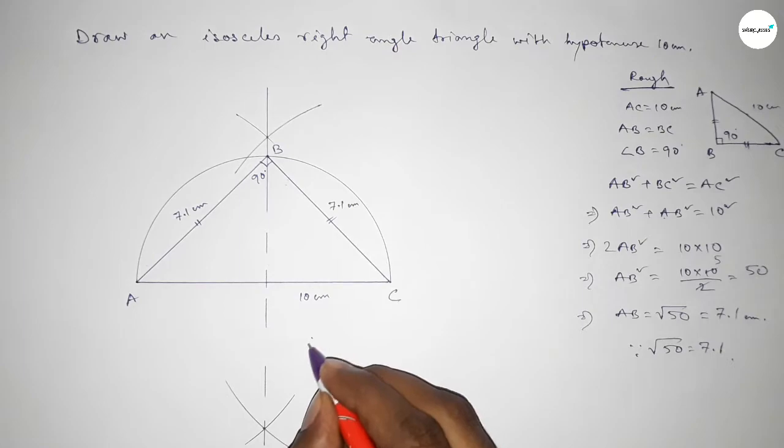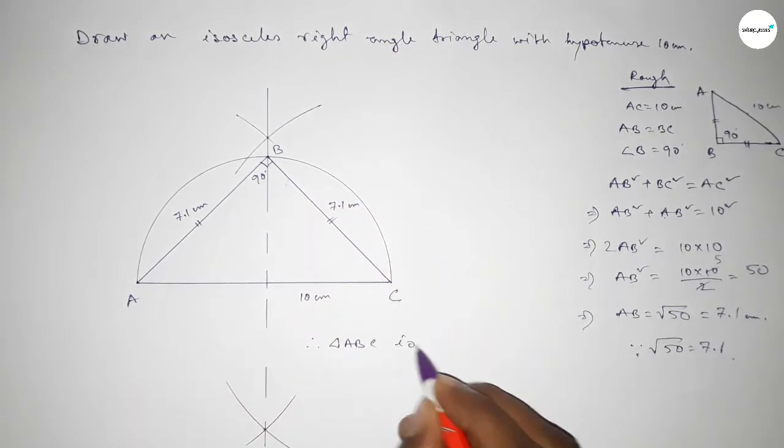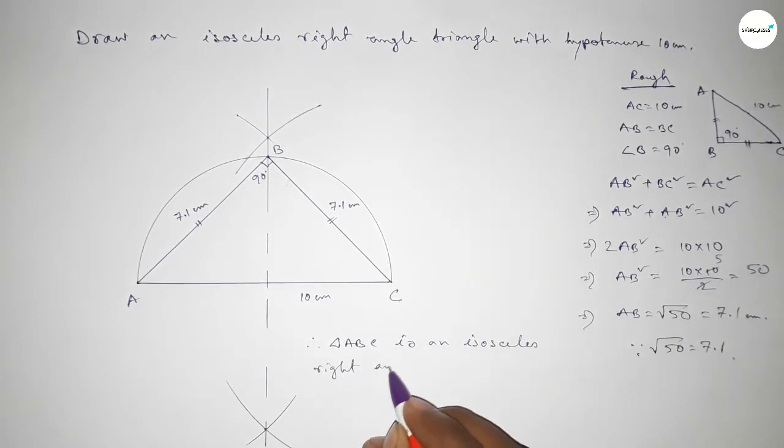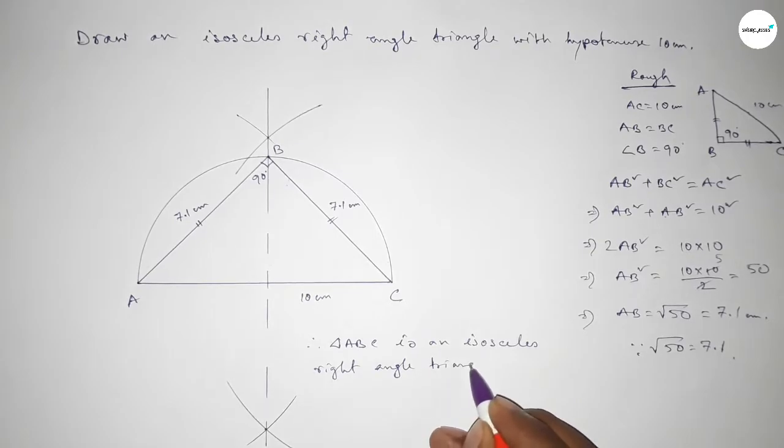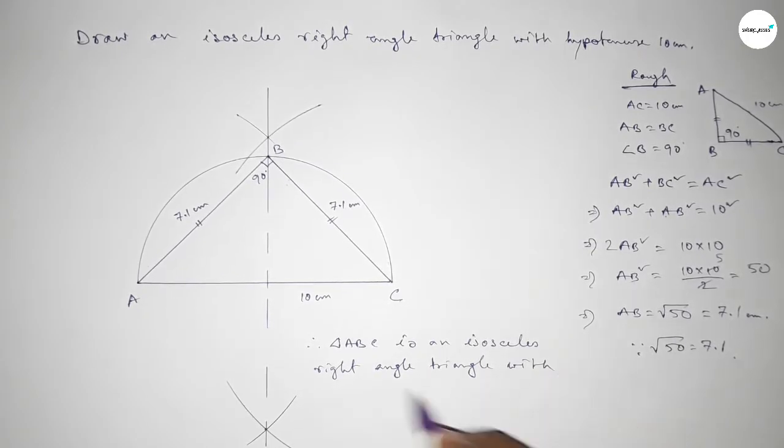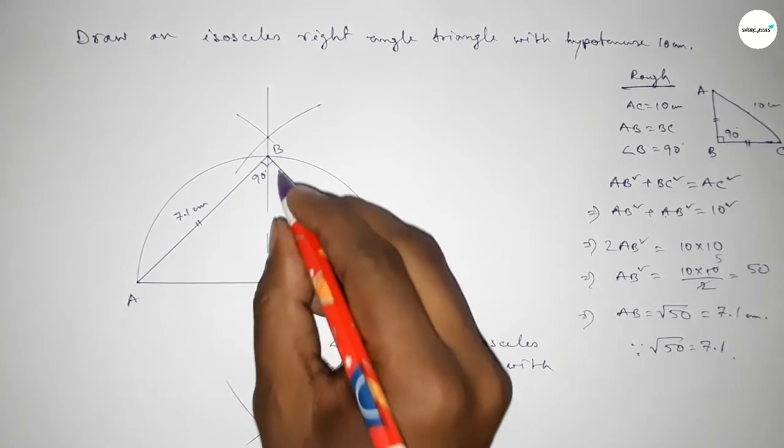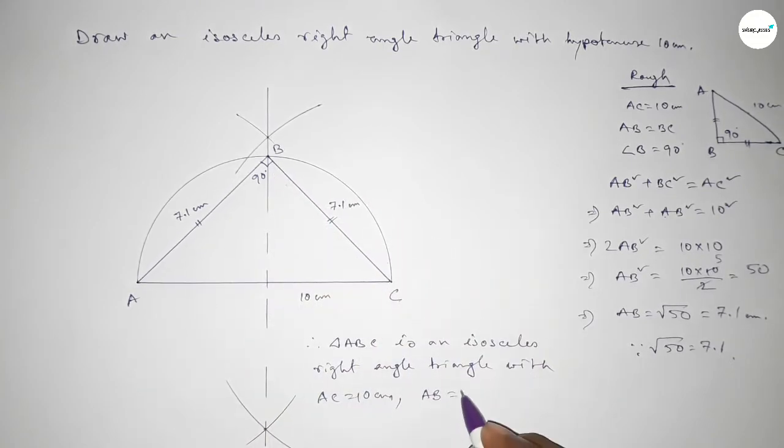And this is 10 centimeter. So therefore triangle ABC is an isosceles right angle triangle with hypotenuse AC equal to 10 centimeter and AB and BC both are equal, so equal to 7.1 centimeter and angle B equal to 90 degrees.